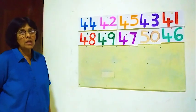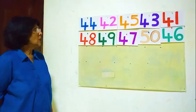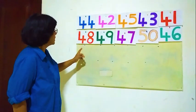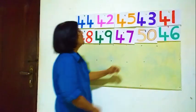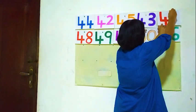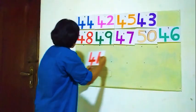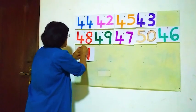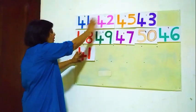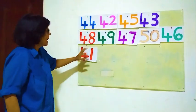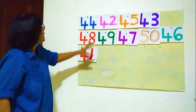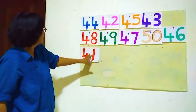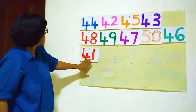Now the first one is 41. We'll take that 41 and start from here, put it here: 41. Here 41. Now 41 is the smallest number out of all these numbers. All the other numbers are bigger than 41, so this is the smallest one.